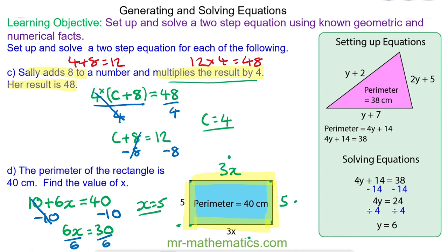And let's check this works. We have 5. 3 times 5 is 15. Add another 5. Add another 5. And that distance around the edge does make 40.